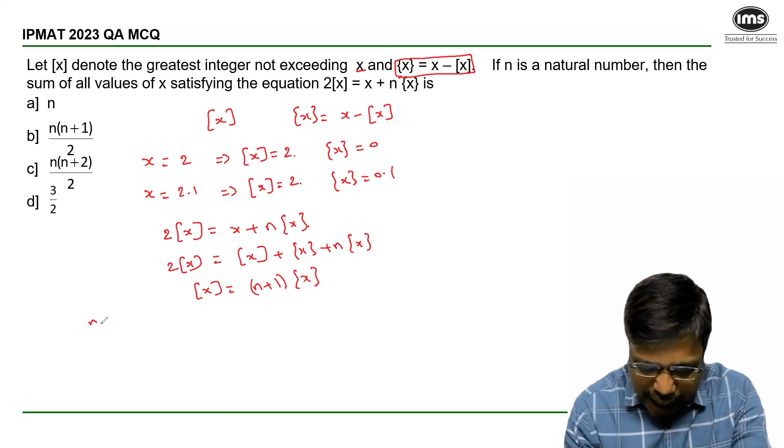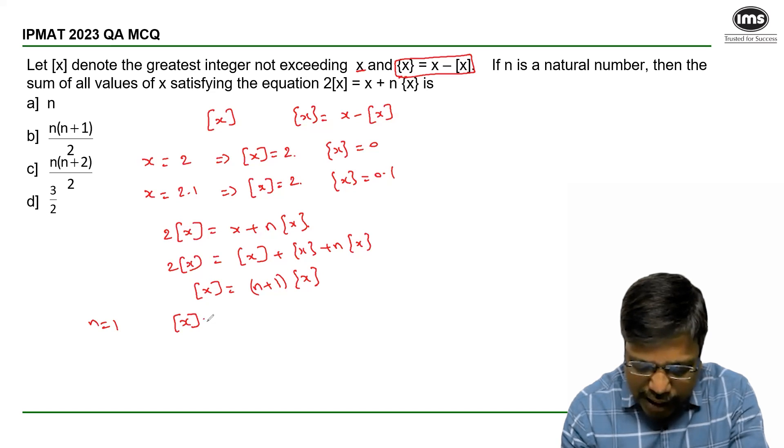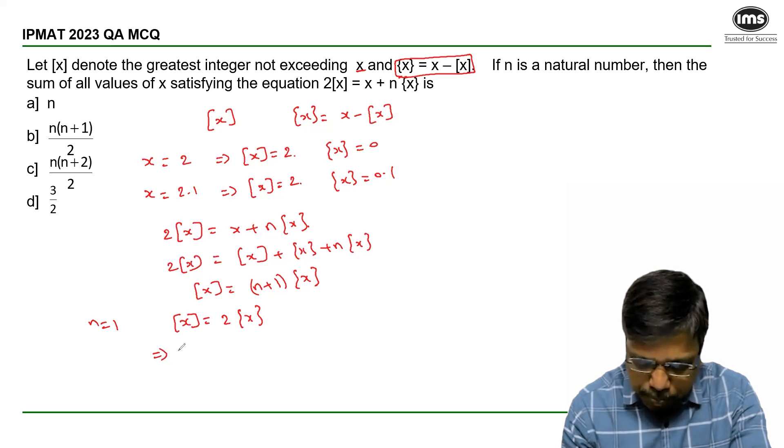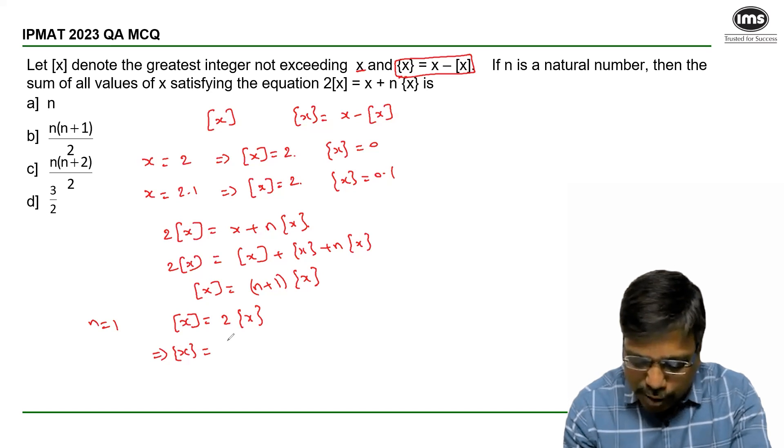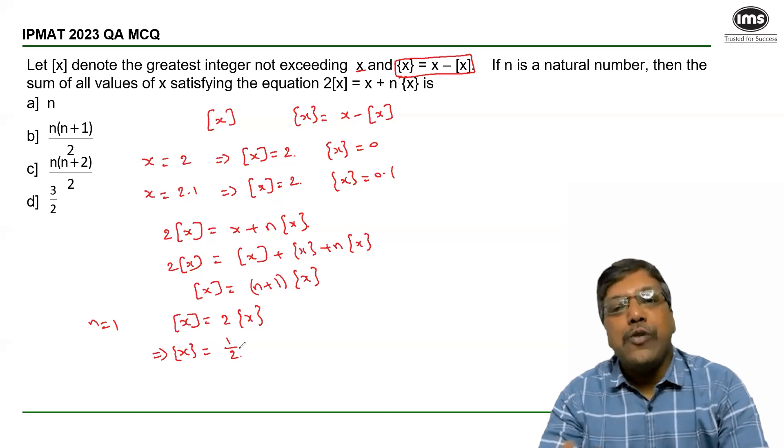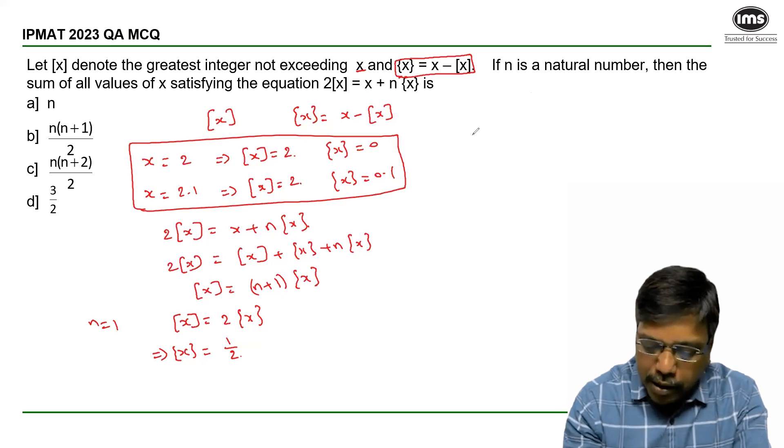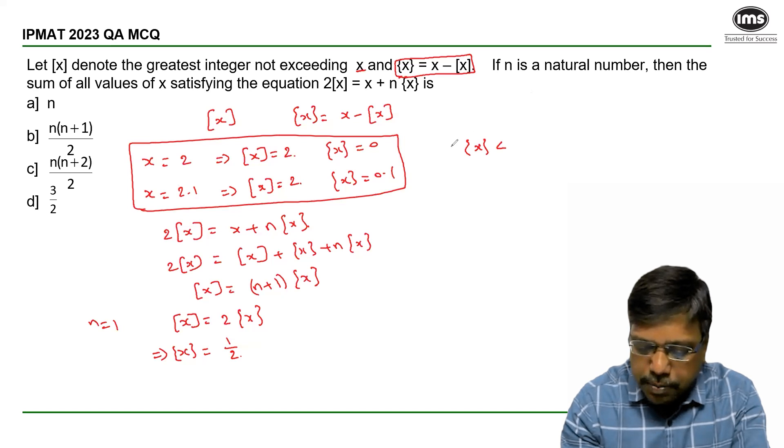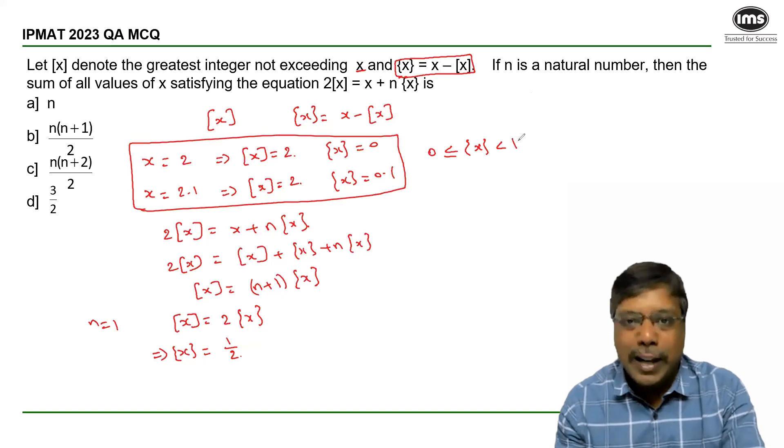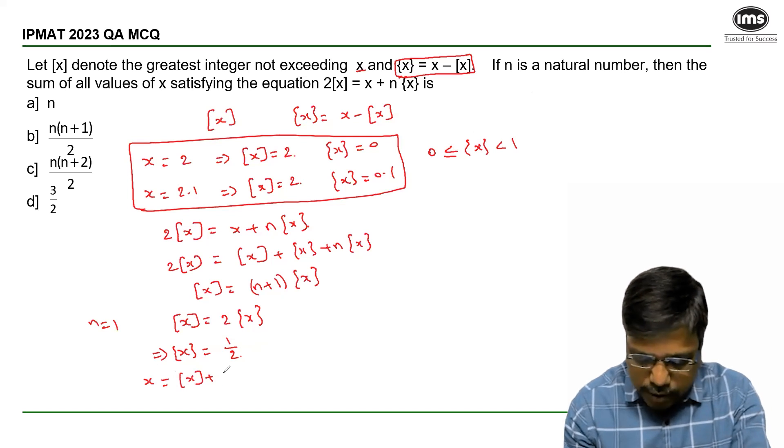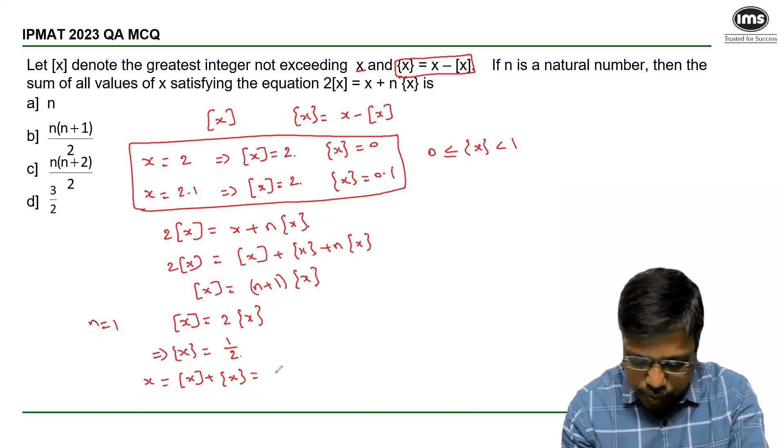Suppose if I take n = 1, then [x] = 2{x}. It means if I multiply the fractional x with 2, I am getting an integer, so I can clearly say that the fractional value is 1/2. Also we understand that {x} ranges from 0 to before 1. So when {x} is 1/2, x = [x] + {x} = 1 + 1/2 = 3/2.